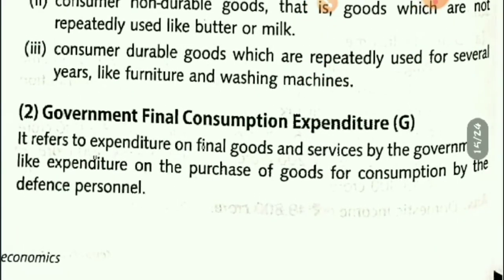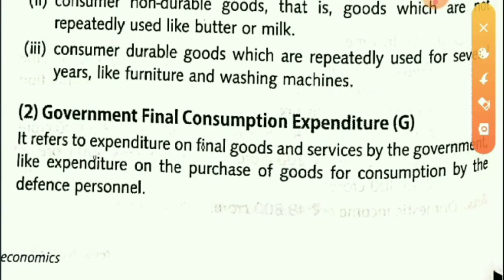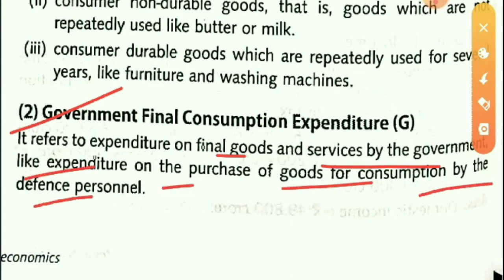The second type is Government Final Consumption Expenditure. It refers to the expenditure on final goods and services by the government — for example, expenditure on the purchase of goods for consumption by defense personnel.